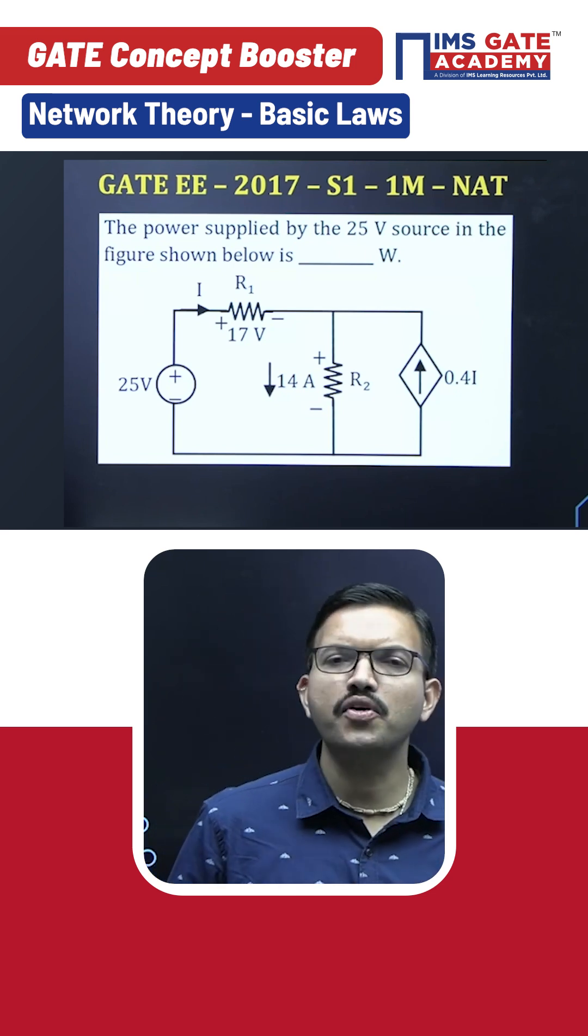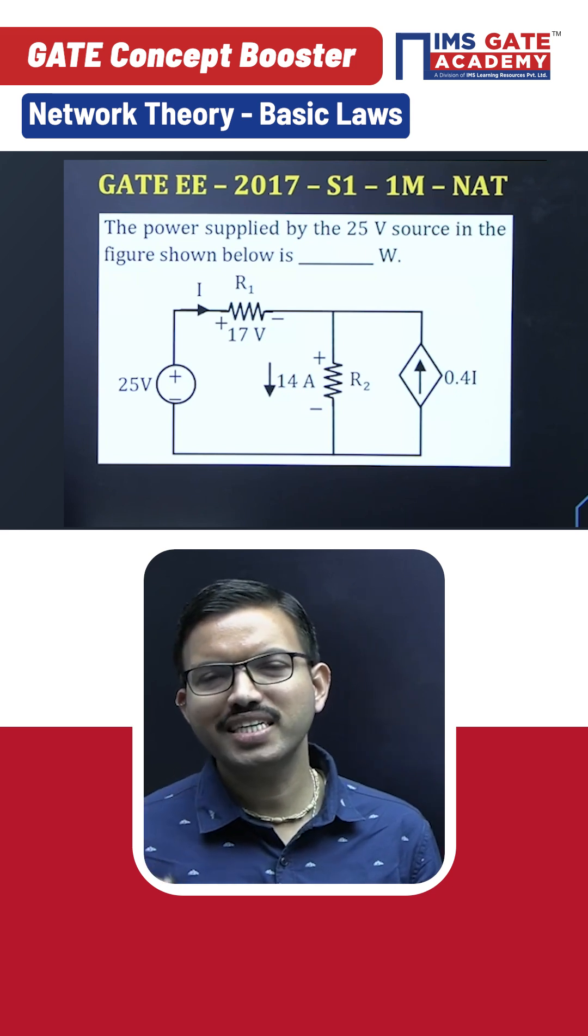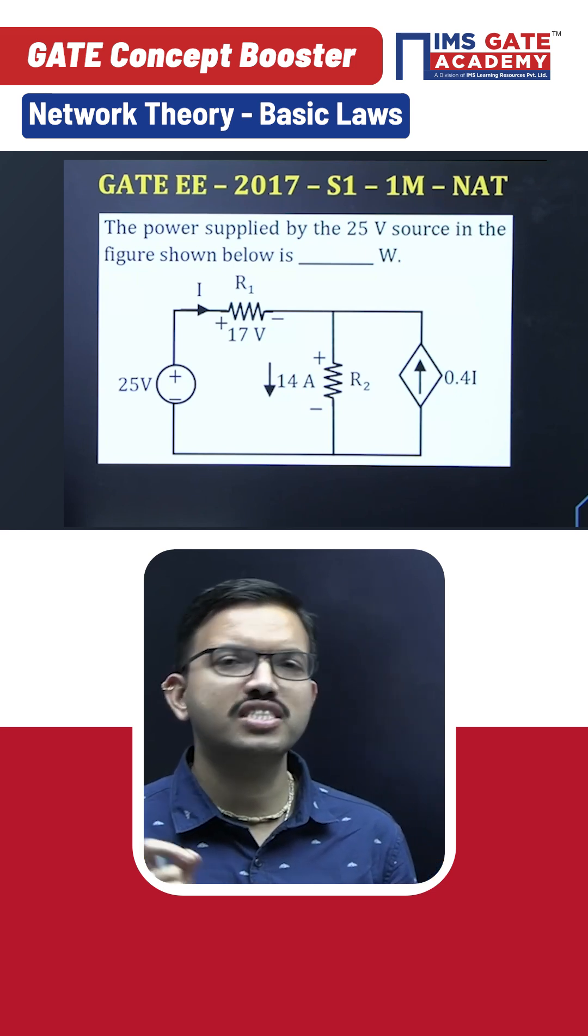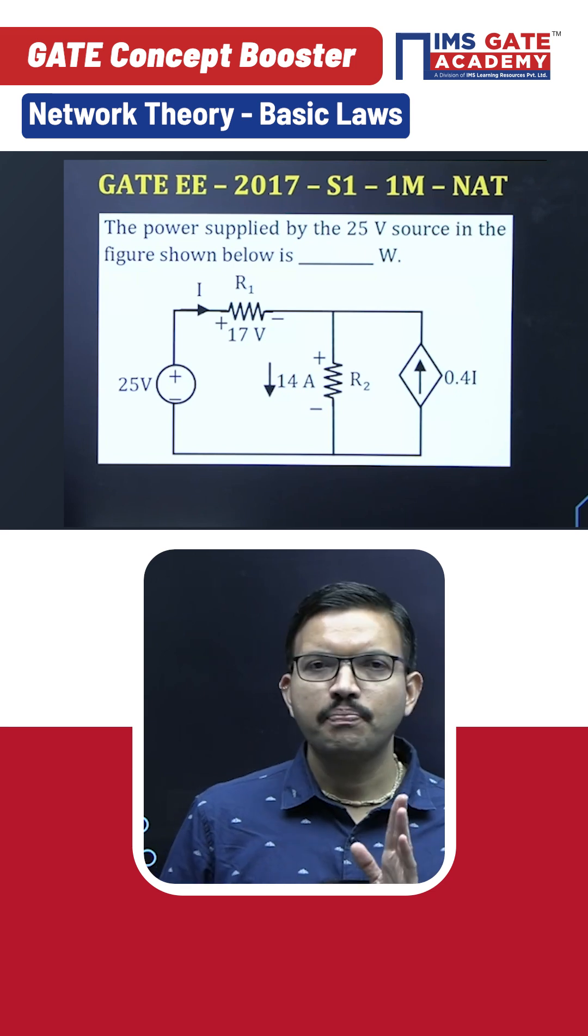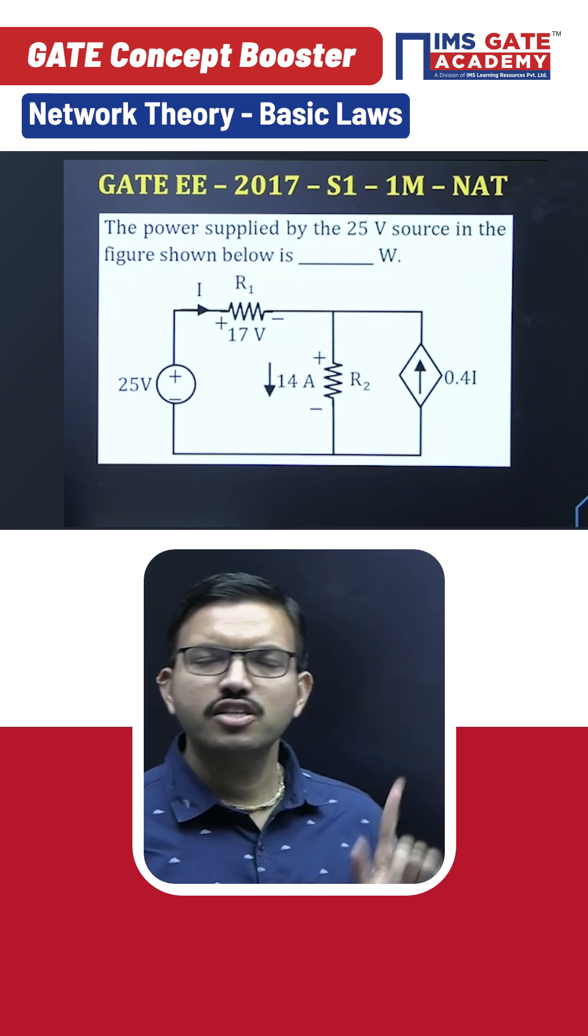In this question, the most important thing is since they have mentioned clearly the power delivered by or power supplied by 25 volt source, that means current has to leave from positive. That means whatever the current direction they have given in this circuit i is exactly the same.